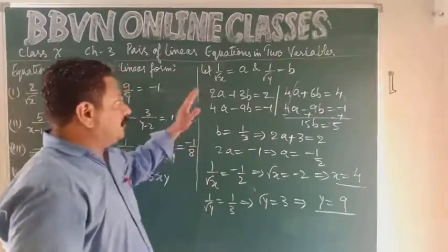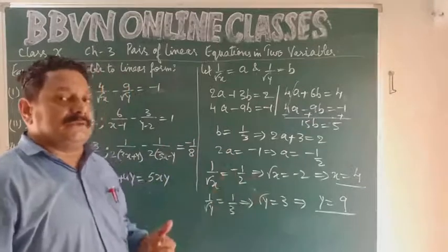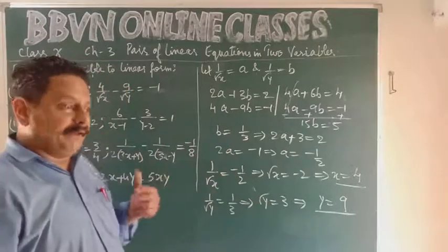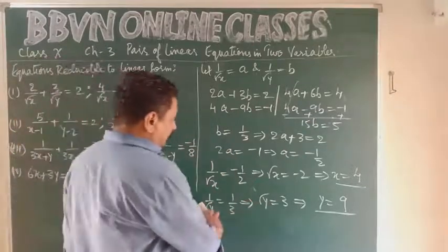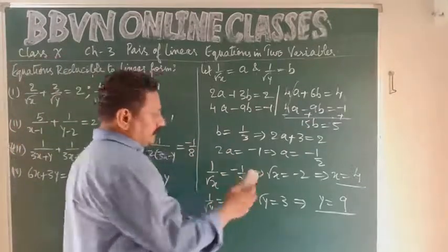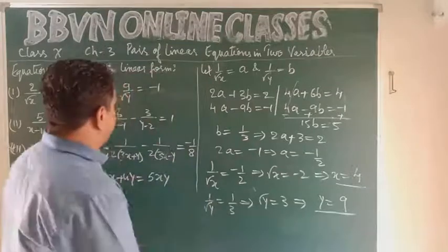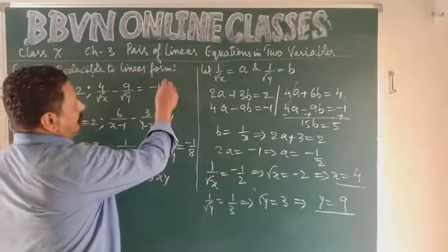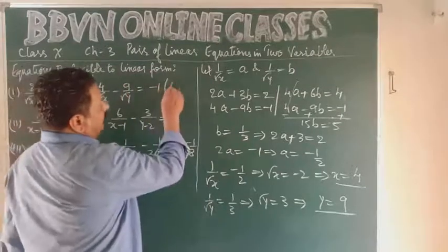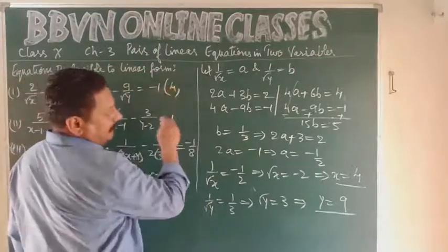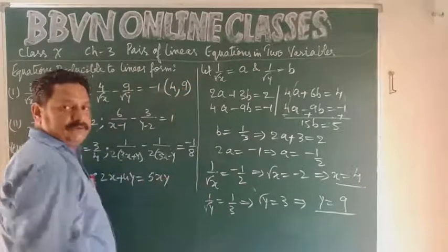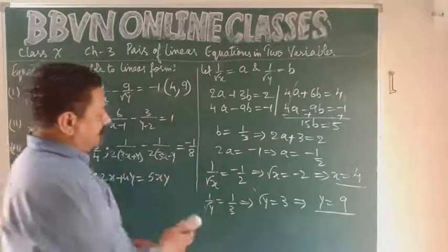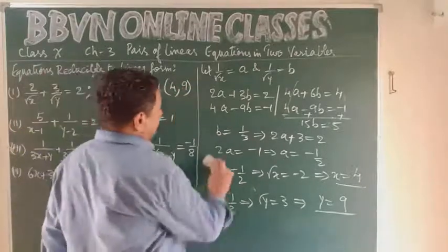These are the equations which can be reduced into the form of a pair of linear equations in two variables. The solution to the first problem is x = 4 and y = 9.